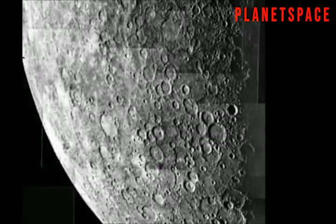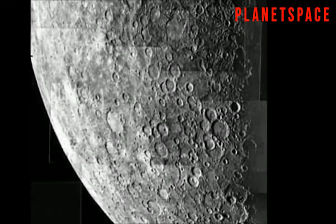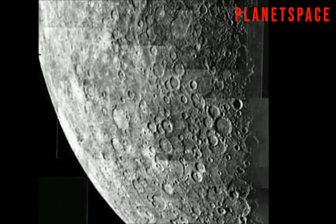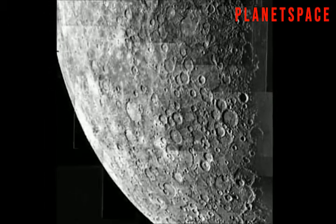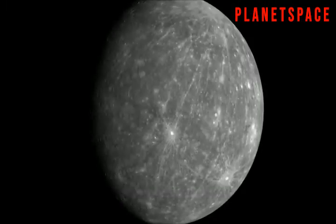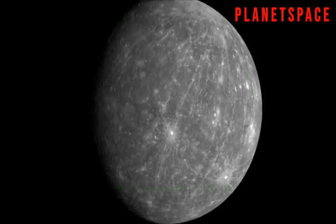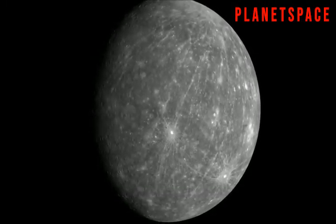Mercury is a lot like our moon. It's small and has a rocky surface with craters on it. It has no moon of its own and no air to breathe. You probably wouldn't enjoy a visit to Mercury, since temperatures are boiling hot in the sun and freezing cold in the shade.